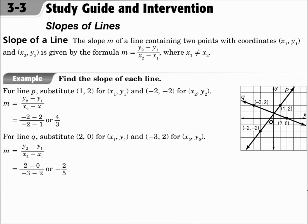This is lesson 3.3, Slopes of Lines. Your objectives are to find slopes of lines and to use slopes to find parallel and perpendicular lines. The slope m of a line containing two points with coordinates x1, y1 and x2, y2 is given by the formula m equals y2 minus y1 over x2 minus x1, where x1 is not equal to x2. Remember, those twos and ones are not exponents — they just mean the first x and the second x and the first y and the second y. We'll substitute our numbers in and find the slope.